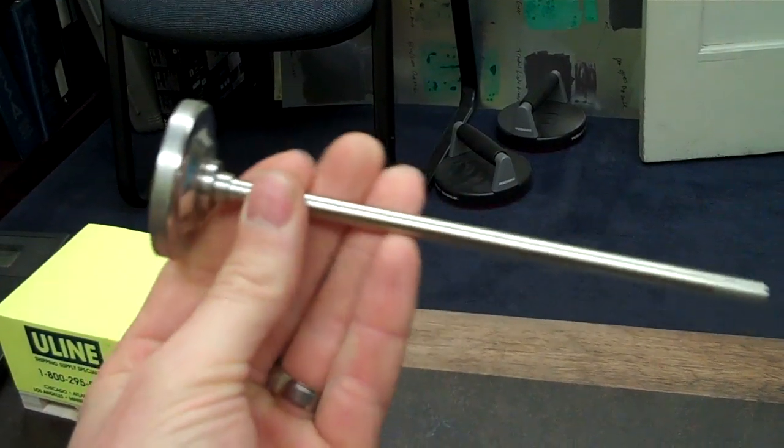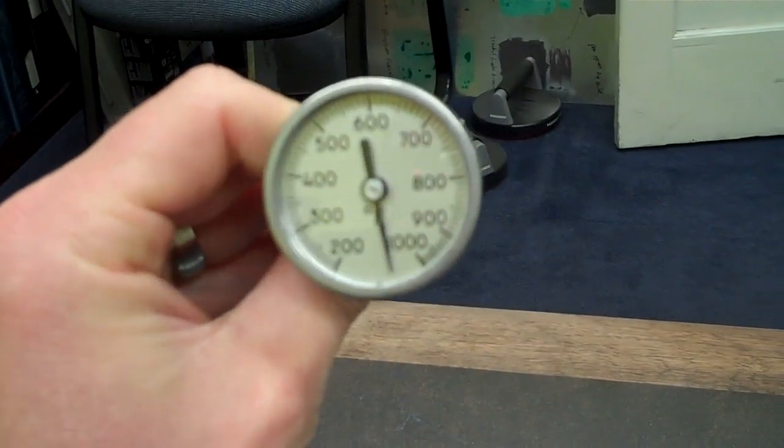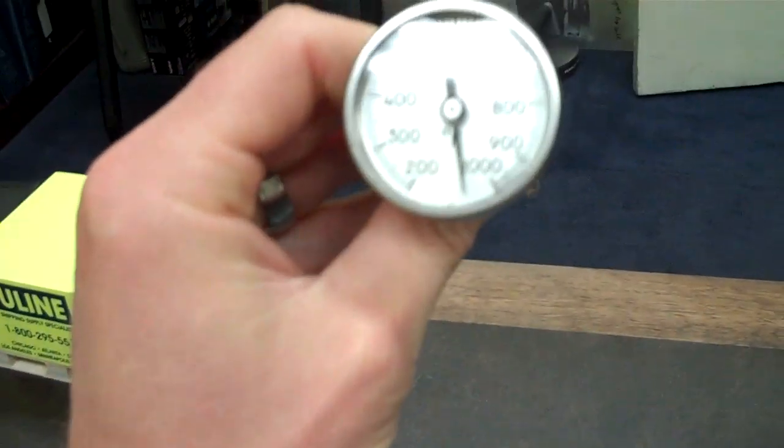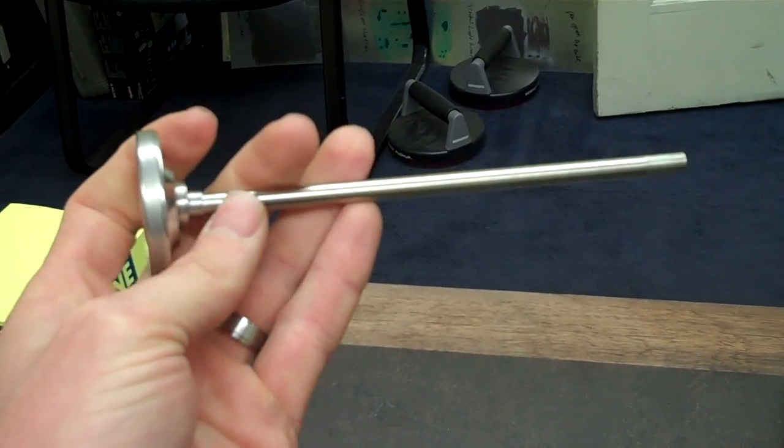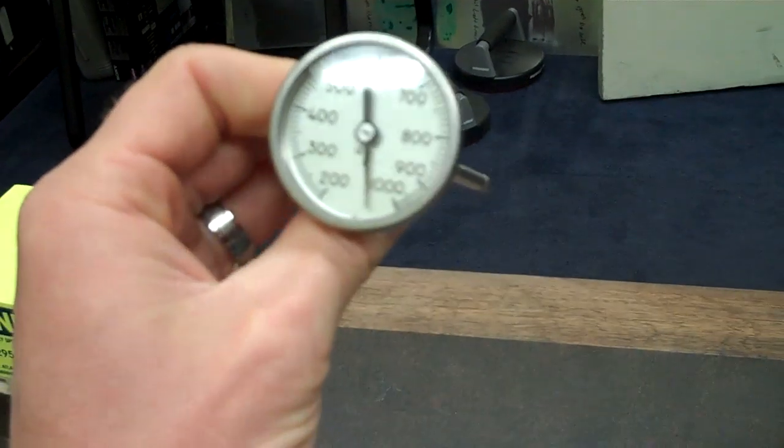This is from the same manufacturer as RCBS, just without the logo, so we can sell it for less while maintaining the same high quality. It's a lot better than the Lyman—more accurate and should last longer.